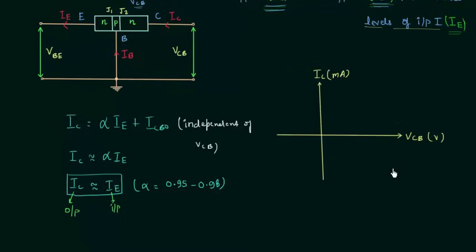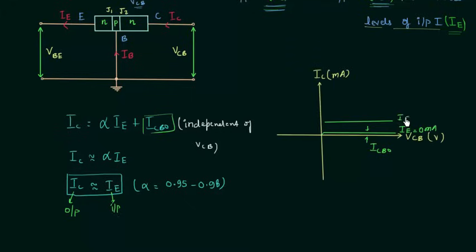When the emitter current IE is equal to 0 mA, the output current is nearly equal to 0 mA — this small residual current is ICBO, the reverse saturation current. When IE is equal to 5 mA, the collector current is nearly equal to 5 mA. In the same way, when IE is equal to 10 mA, the collector current is nearly equal to 10 mA. This is the output characteristics of the common base transistor, and this region is called the active region.